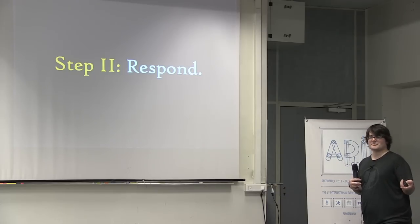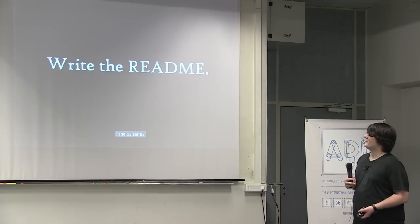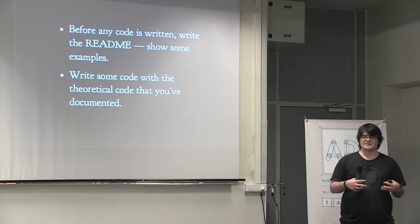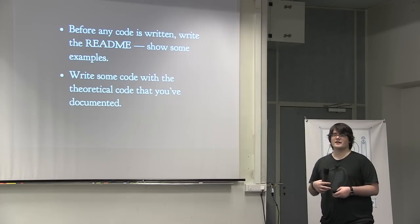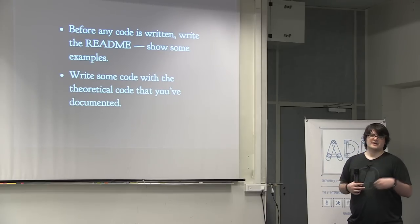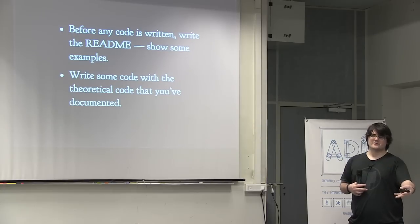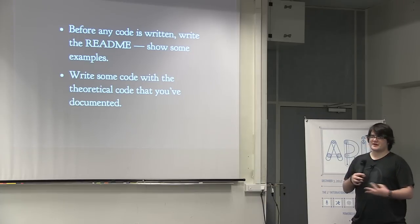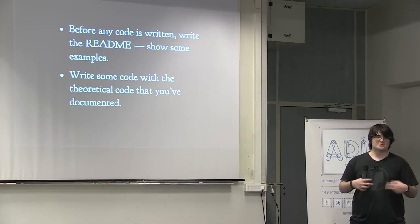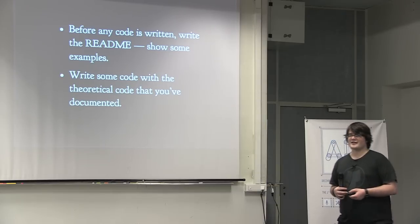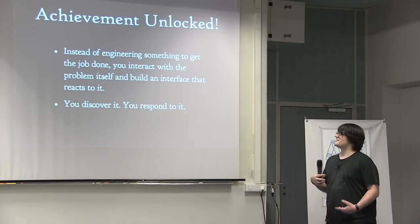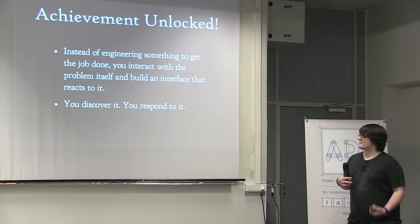After we have a firsthand problem and try to solve it, we can respond to the problem. I do this by writing the readme first. Essentially, before any code is written at all, if I'm going to build an API — at a language level or an HTTP level — I will write the text documentation with simple usage examples: here's how I want to get something done, here are the things I'll call in my thing that isn't written yet, and here's the response I'll get. You do that before you write a single line of code. It allows you to build it properly because you're experiencing the problem firsthand before doing all the hard work of architecting it. Instead of engineering something to get the job done, you interact with the problem itself, build an interface that reacts directly to it, and discover and respond to it.